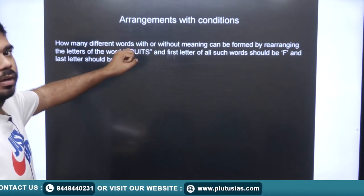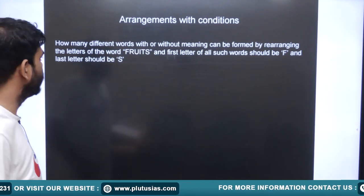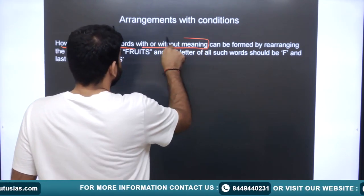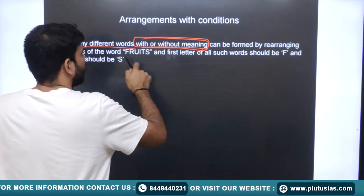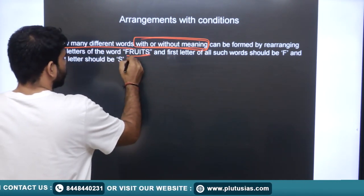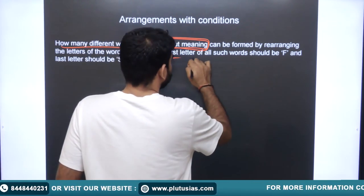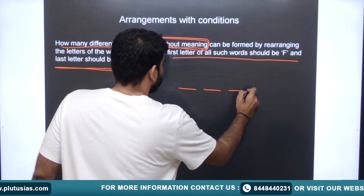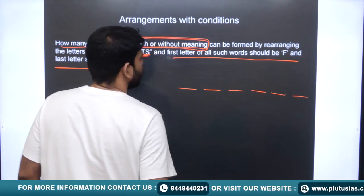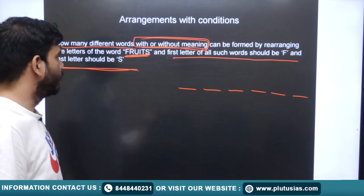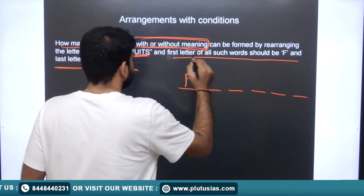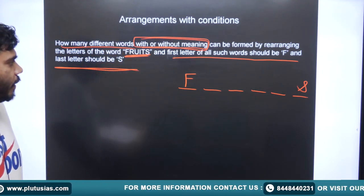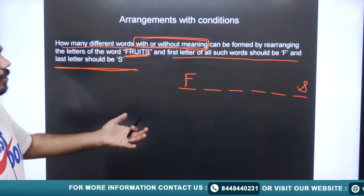Now a similar question but with two constraints: how many different words with or without meaning can be formed by rearranging the letters of FRUITS such that the first letter is F and the last letter is S? Two constraints are provided and we must find all possible rearrangements.